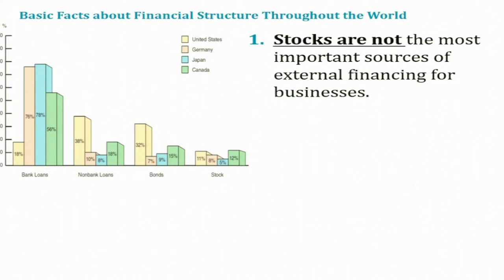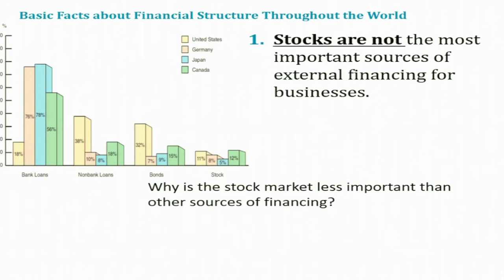An important observation is that, in contrast to what we normally think, stocks are not the most important sources of external financing for businesses. The question then is: why is the stock market less important than other sources of financing? We will answer this by discussing appropriate theoretical frameworks and then relating them to empirical aspects.